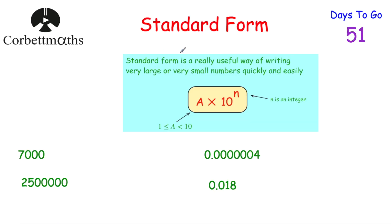Standard form is a really useful way of writing very large or small numbers very quickly and easily. If we've got a number in standard form, it has to be in the form a × 10^n, where a is a number bigger than or equal to 1 but less than 10 — for instance 8, 9.2, or 1.77 — multiplied by 10 to the power of n, where n is an integer, such as 10², 10⁷, or 10⁻⁵.